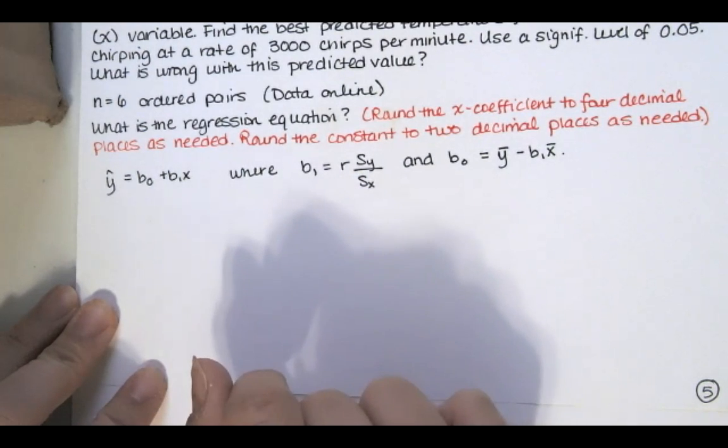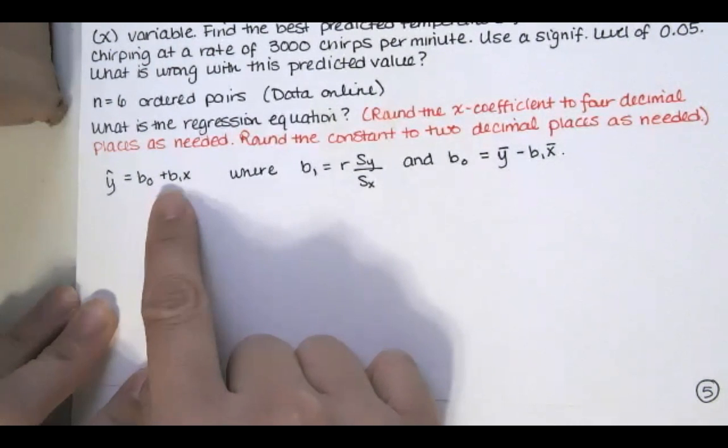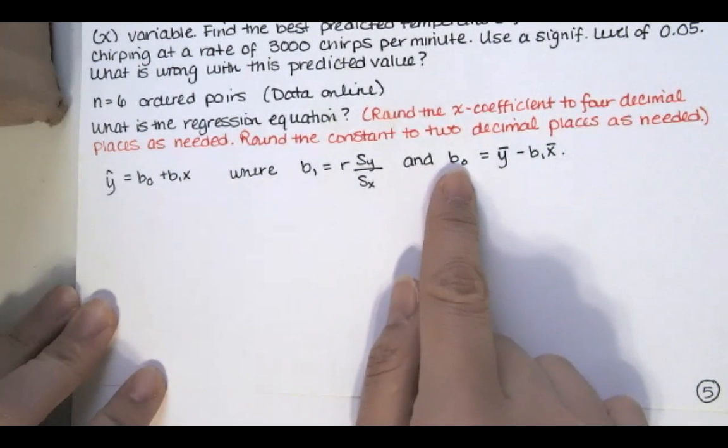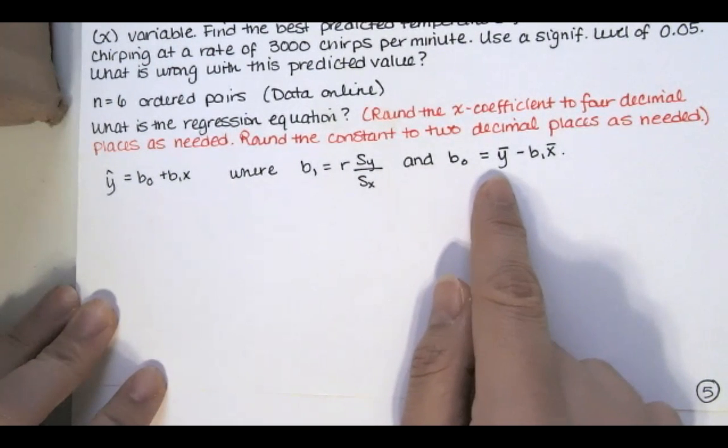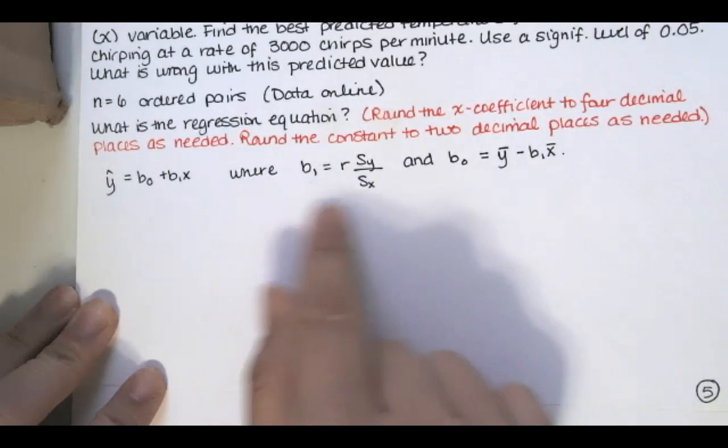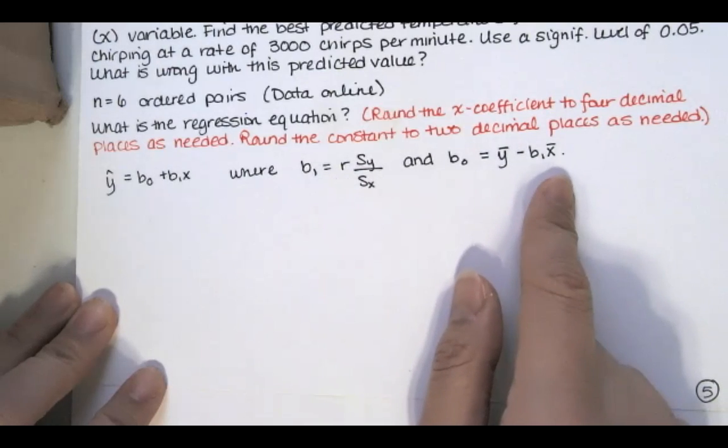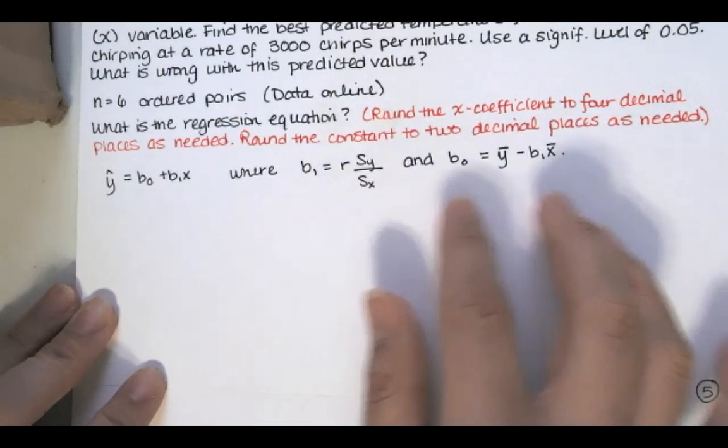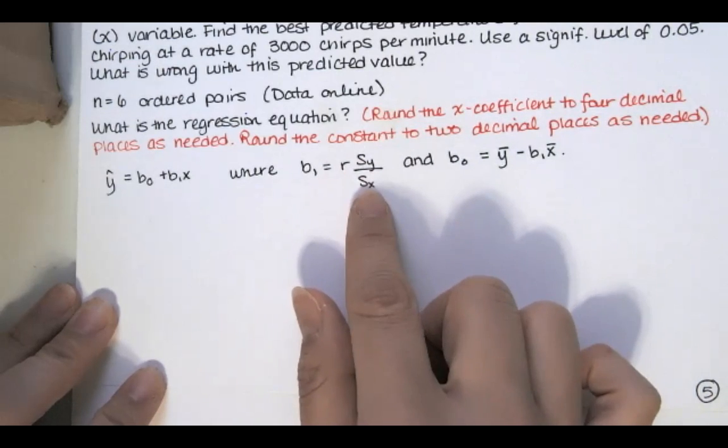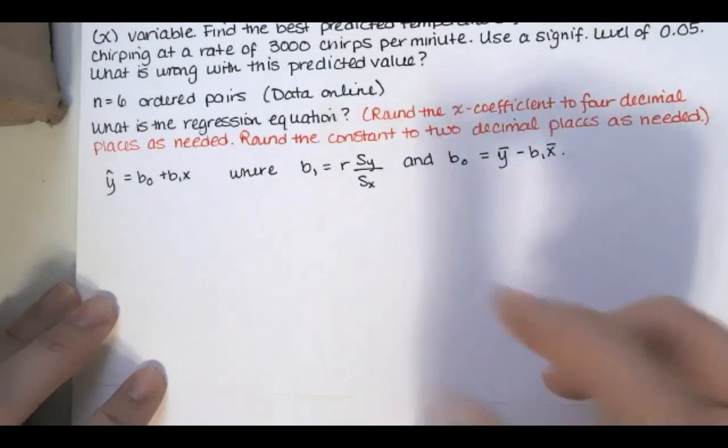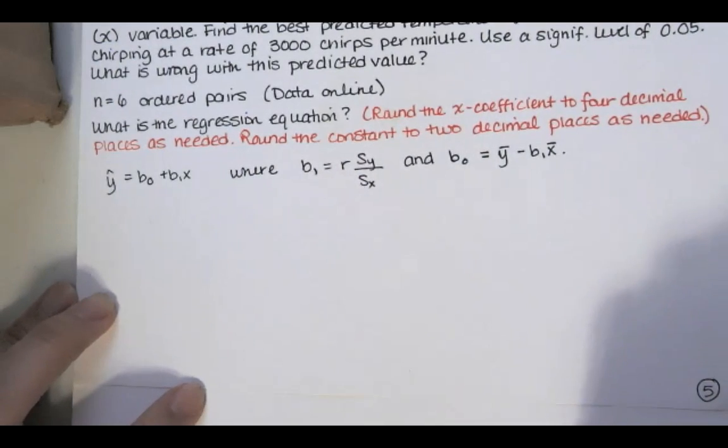And then we'll use this formula to compute our slope here. And then for b sub 0, we just need to take the sample mean of the y's and subtract the b sub 1 that we just calculated times the sample mean of the x's. Again, all of these quantities, the two sample standard deviations, x bar and y bar, are easy to compute with built-in functions in Excel.